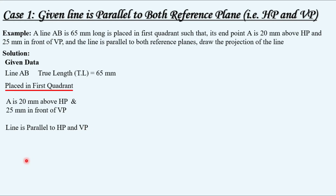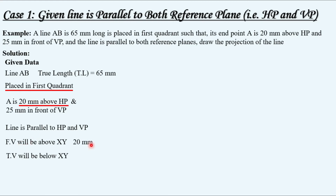As the first quadrant is mentioned, according to first quadrant rules, the front view will be above the XY line and the top view will be below the XY line. The distance given with respect to HP is used to draw the front view. So point A will have its front view 20 mm above the XY line and its top view 25 mm below the XY line.